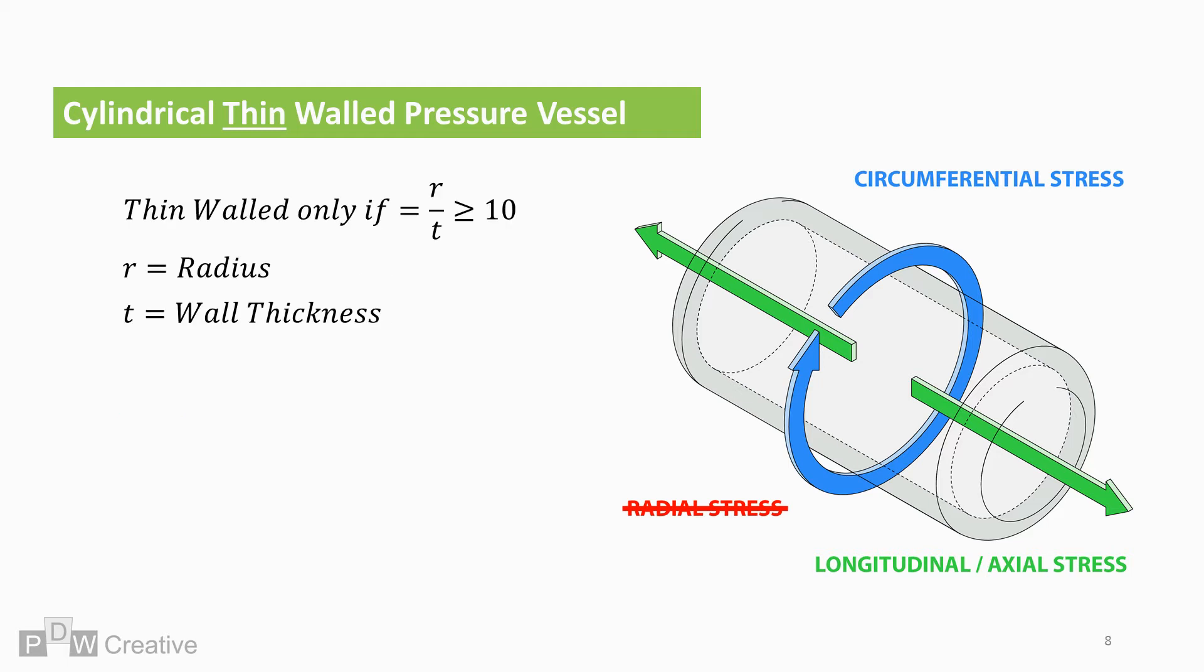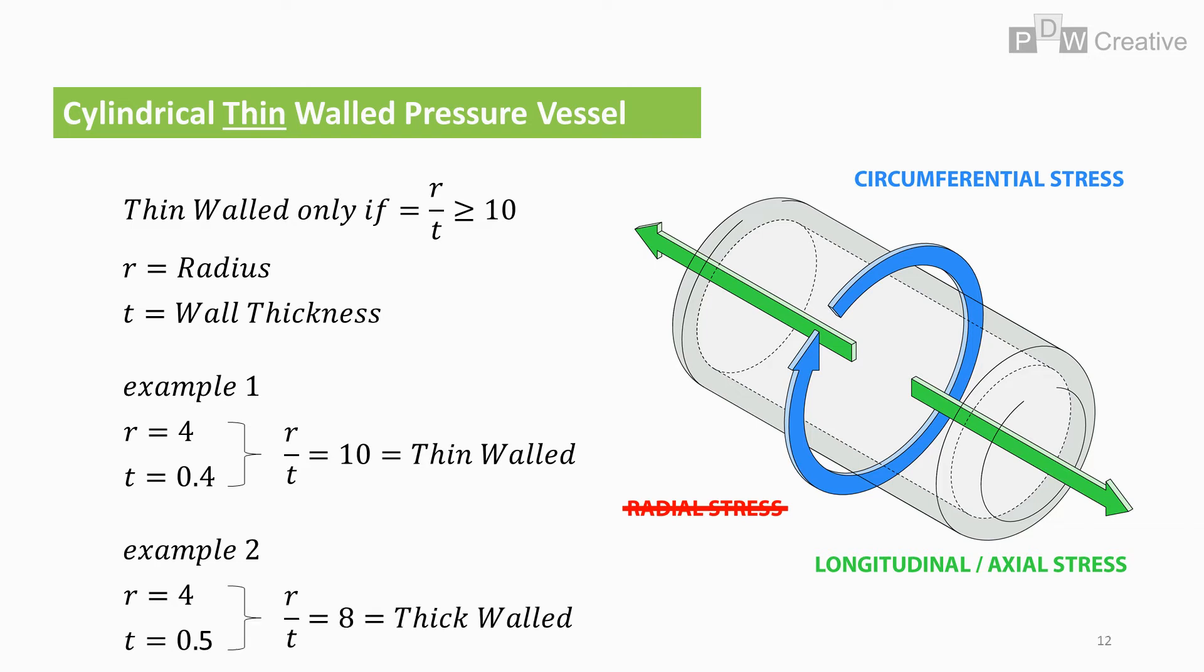To consider a vessel thin walled, the ratio of radius over wall thickness must be greater or equal to 10. A cylinder of 4 metres, inches, feet or other designation and thickness of 0.4 of the same units would generate a ratio of 10, making it thin walled. Increasing the thickness to 0.5 tips the ratio. The ratio decreases to 8 so the vessel is thick walled.